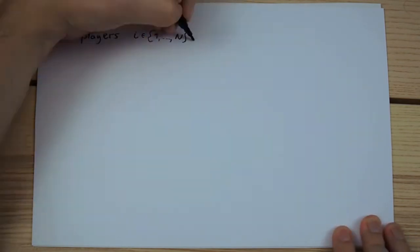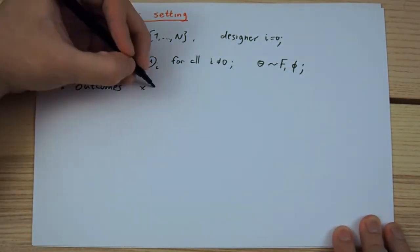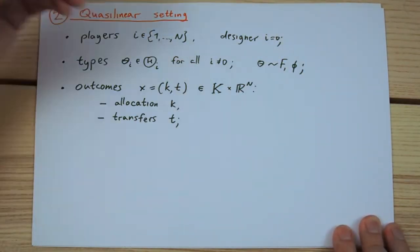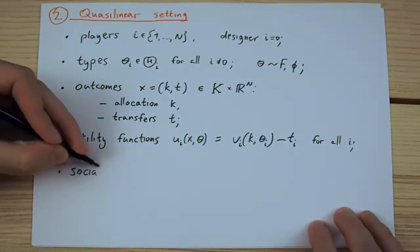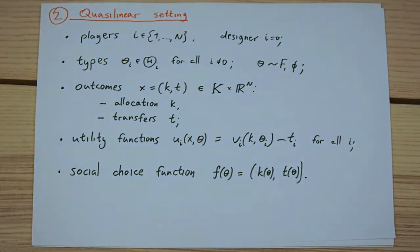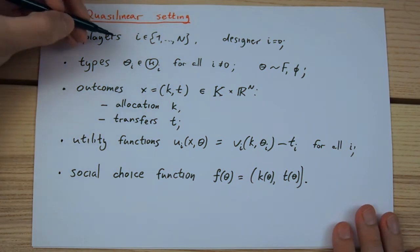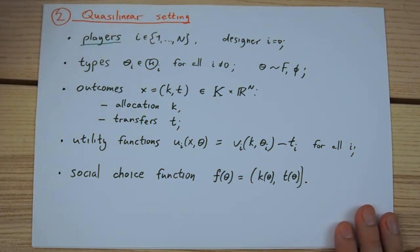The second setting is the quasi-linear setting, which is used in most of the literature. The first two elements are the same as before. We have a set of players, each of which has some private type.